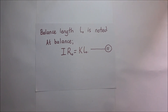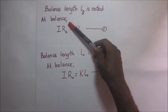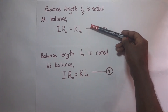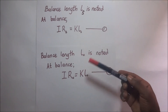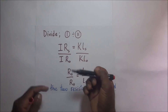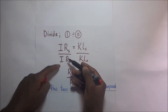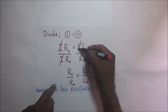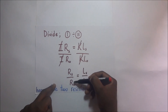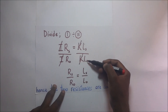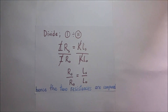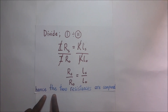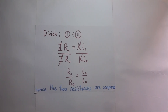Now that we have both expressions, we divide expression one by expression two. The current I and the PD per unit length k cancel on both sides, leaving us with RS over R₀ equals LS over L₀. From this expression, we are able to compare the resistances using the potentiometer.